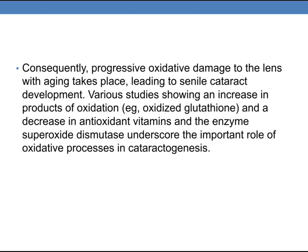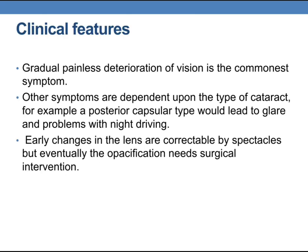Various studies showing an increase in products of oxidation and oxidized glutathione, and a decrease in antioxidant vitamins and the enzyme superoxide dismutase, underscore the important role of oxidative processes in cataractogenesis. Gradual, painless deterioration of vision is the common clinical symptom. Other symptoms depend upon the type of cataract — for example, a posterior capsular type leads to glare and problems with night driving. Early changes in the lens are correctable by spectacles, but eventually the opacification requires surgical intervention.